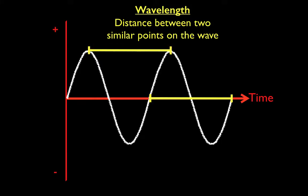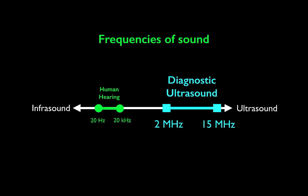Wavelength is the distance between any two similar points on a wave — at the baseline, the peak, halfway up, or at the nadir. Don't confuse this with period, which is the time it takes to complete the positive and negative deflection. Humans can only hear 20 Hz to 20 kHz, whereas diagnostic ultrasound operates from 2 MHz to 15 MHz — well outside our hearing range.